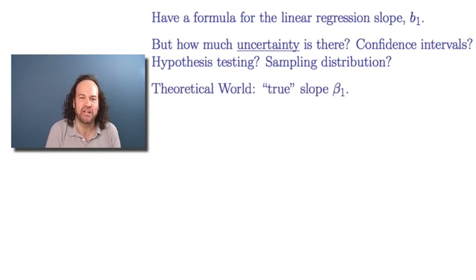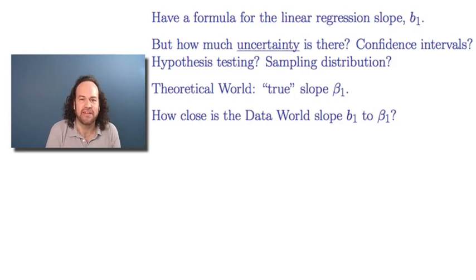So for this to make sense, we have to imagine that there's a theoretical world with a true underlying slope, which we'll now call beta one, to distinguish it from the B1, which is the experimental or data world. And now we want to say, how close are these things to each other? That is, we got from our data a value B1. How close is that to the true theoretical underlying value of beta one?